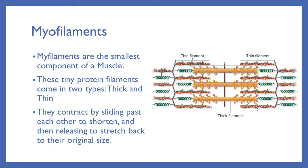Myofilaments are the smallest component of a muscle. These tiny protein filaments come in two types: thick and thin. This picture of the myofilaments shows the thick filaments in the middle in yellow and the small thin filaments on the sides in red.